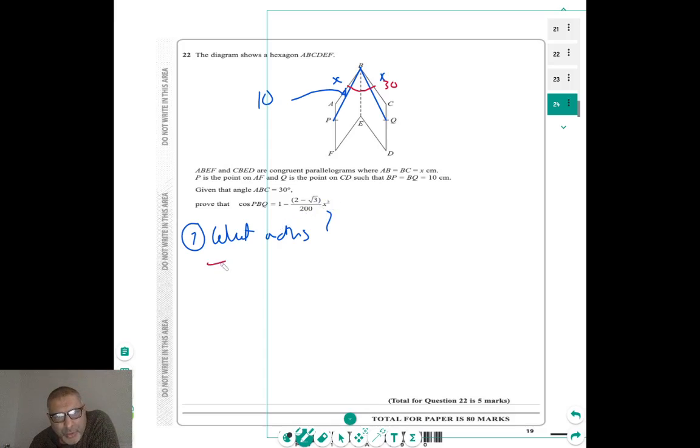Prove that cos PBQ equals 1 minus 2 minus root 3 over 200 X squared. Anyway, so it's trig. I'm going to look at the X squared, and it could be Pythagoras as well. Maybe, I don't know. And that is where, when I have students, they normally stop, but you've got to go a bit beyond that. You've got to dig into detail.